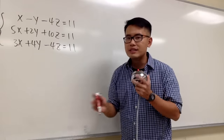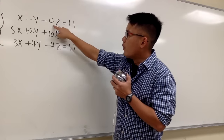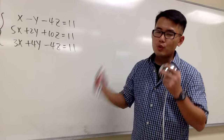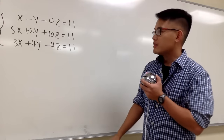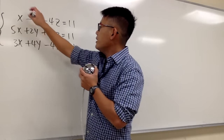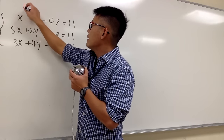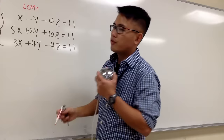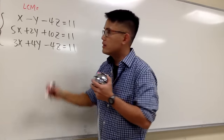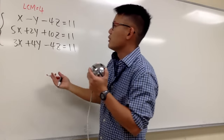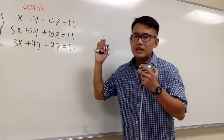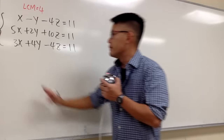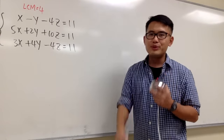And then the LCM of 4, 4, 10, and 4 will be 20. So as we can see, the lowest common multiple of all the numbers in front of the y is just 4, which is the smallest. Let's just eliminate y first, but it's okay if you want to eliminate x.